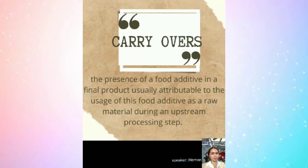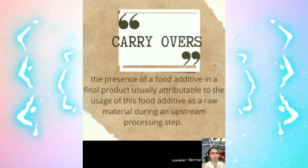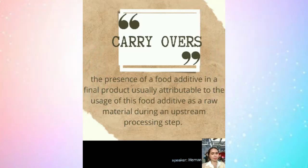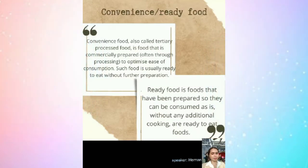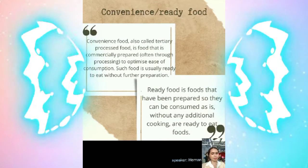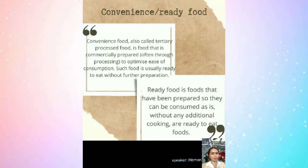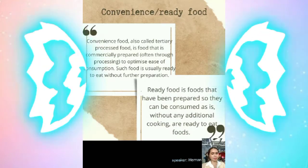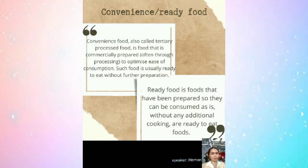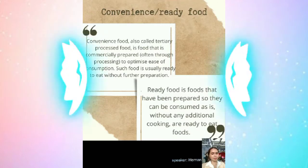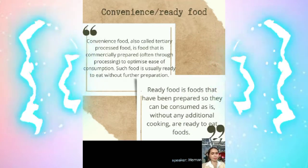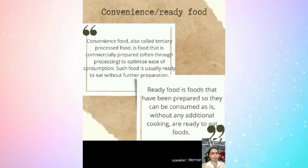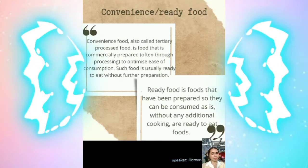Carry over refers to the presence of a food additive in a final product, visually attributable to the usage of that food additive as a raw material during an upstream processing step. Convenience food, also called tertiary processed food, is food that is commercially prepared, often through processing, to optimize ease of consumption. Such food is usually ready to eat without further preparation — it has been prepared so it can be consumed without any additional cooking.